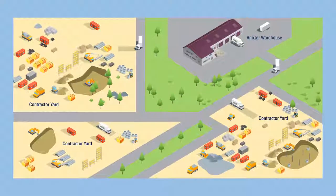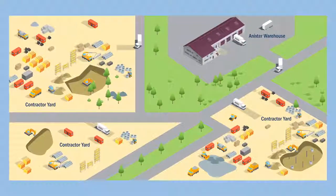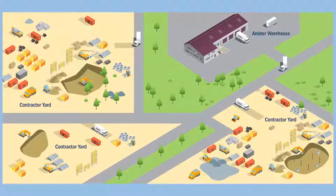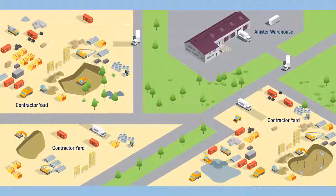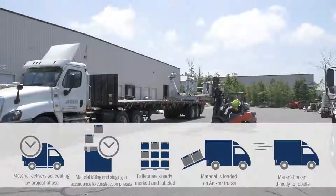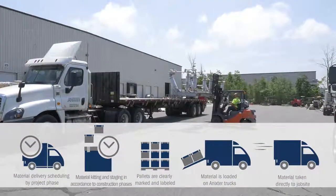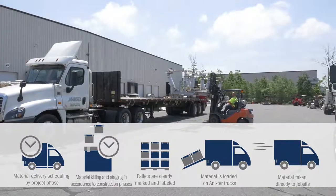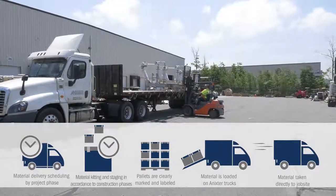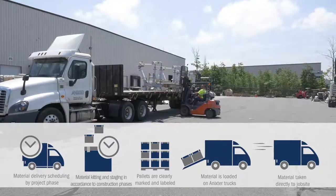Annexter also offers material coordination and job site delivery to contractor yards. We provide whole order delivery, or we can deliver materials by construction phase. When material is ordered, it's loaded on Annexter trucks and taken directly to the job site, placed by pallet with clearly marked labels in accordance with how the contractor needs to execute the work.